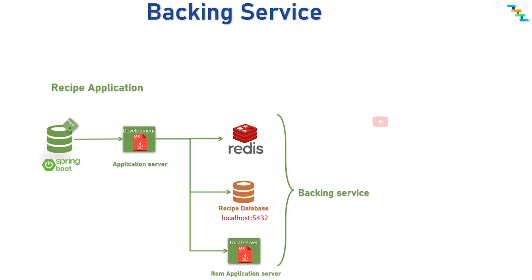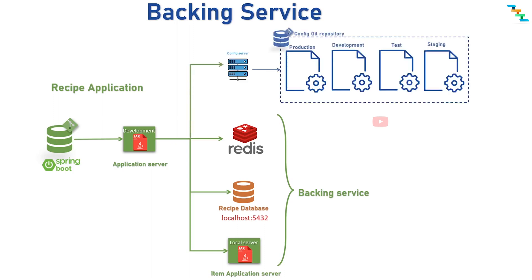In the 12-Factor app, there is no distinction between local or third-party services. For example, the recipe application deployed locally uses the local database, Redis deployed locally, and Items API deployed locally.